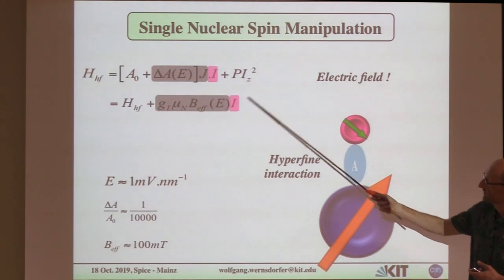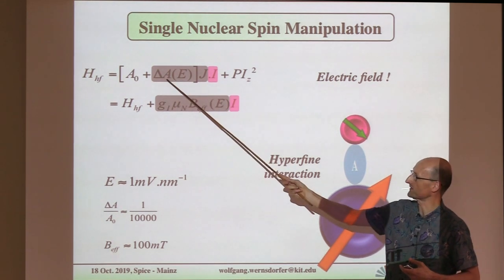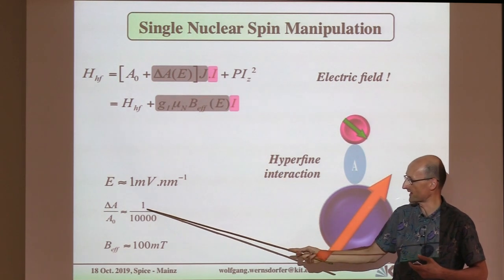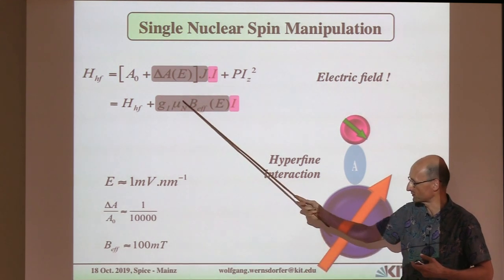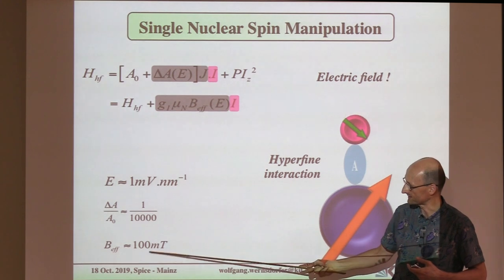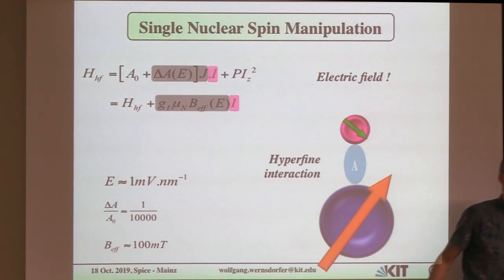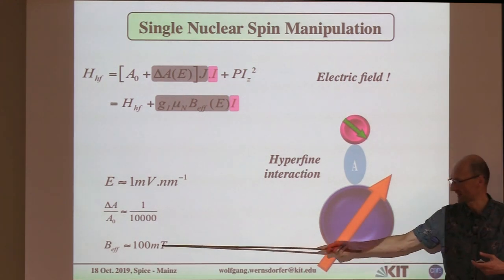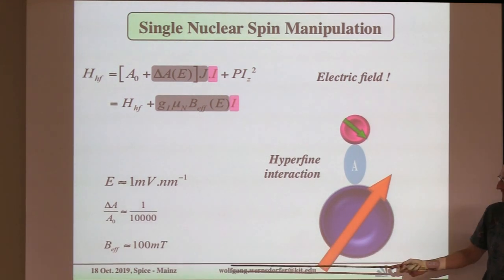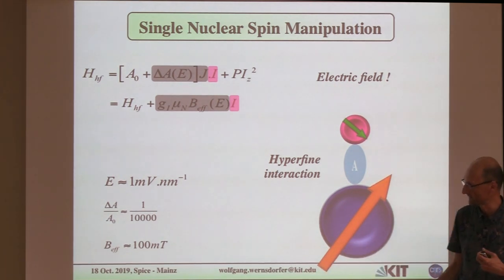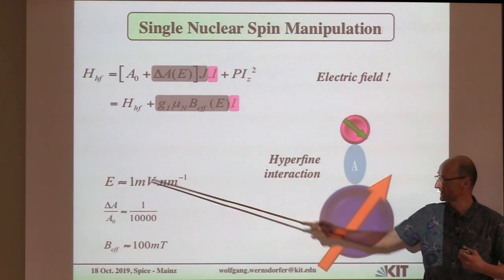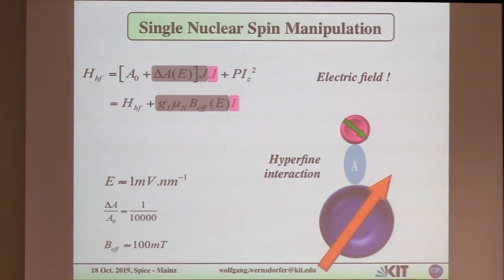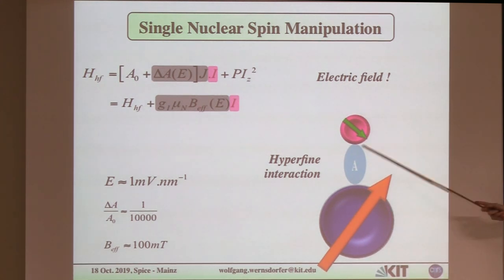If you tune the hyperfine constant A by something like 10^-4 and convert this to an effective B field, you find values of order 100 millitesla — which is interesting for quickly manipulating nuclear spins. You can achieve this very easily with 1 millivolt per nanometer in a junction. Via tuning some parameter, the Stark effect is the important tool we use here.